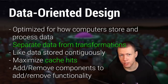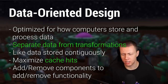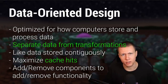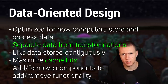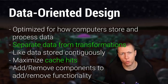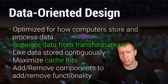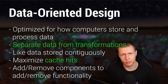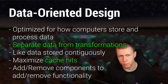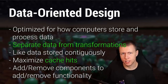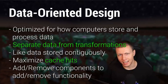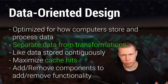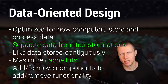Rather than having properties and functions all associated with one object, in data-oriented design we separate everything out — that's where terms like the entity component system come from: a separation between entities, components, and systems. The key is separating data away from logic. Data stands alone, associated with entities (the equivalent of objects), and completely separate systems operate on that data to make things happen — moving things around, changing colors, and so on.